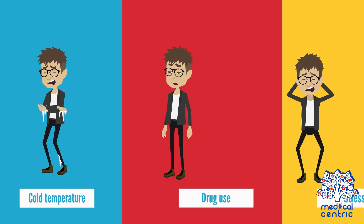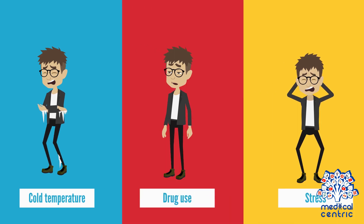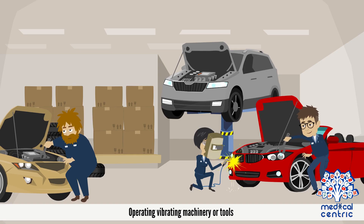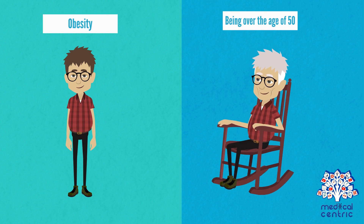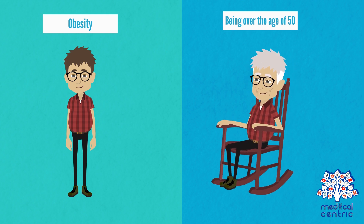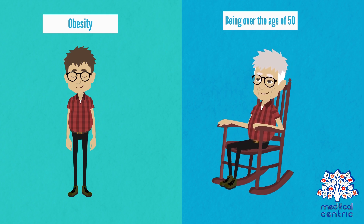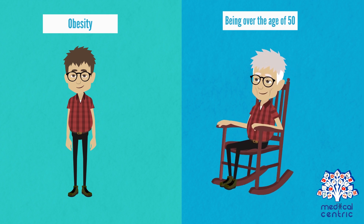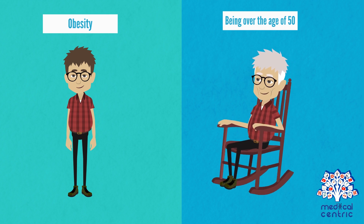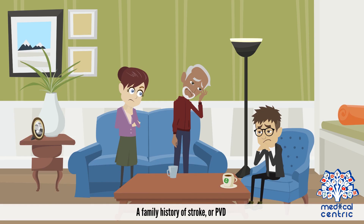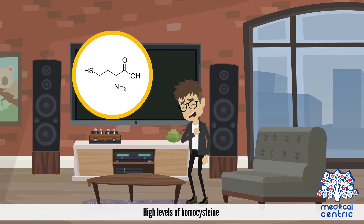Functional PVD is caused by cold temperature, drug use, stress, or operating vibrating machinery or tools. Certain risk factors that may increase your chance of getting PVD include obesity, being over the age of 50, a family history of stroke or PVD, and high levels of homocysteine.